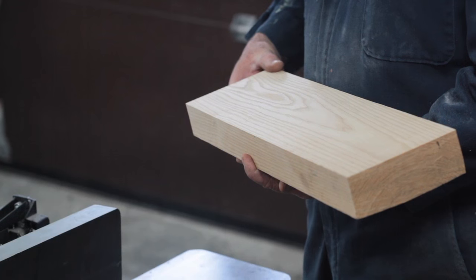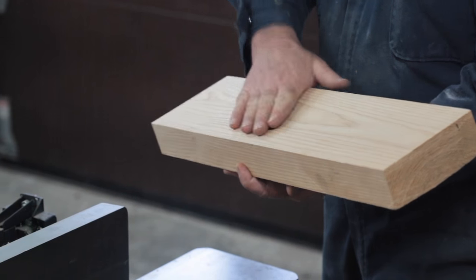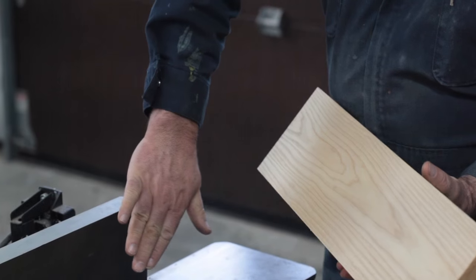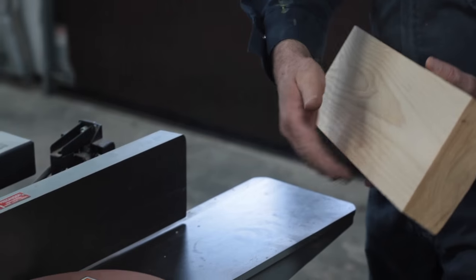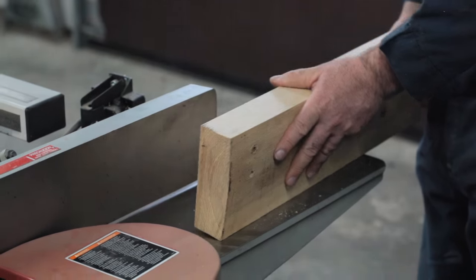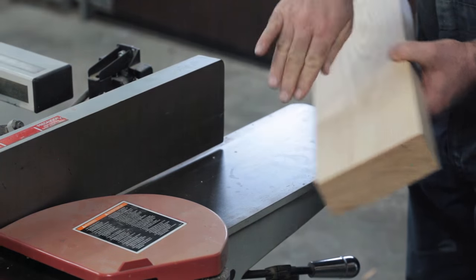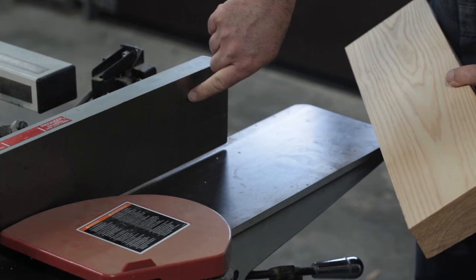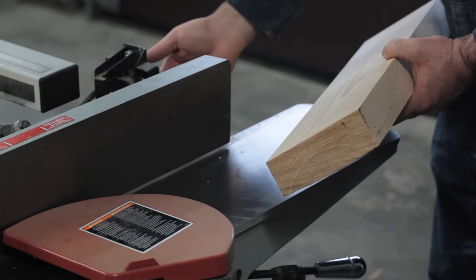With your jointer ready to go there's one thing I need to explain. This is the face that we milled in stage one and it's got to be held tight against the fence of the jointer during this second phase. It doesn't really matter what the bottom edge of the wood does but the milled face needs to go against the fence.